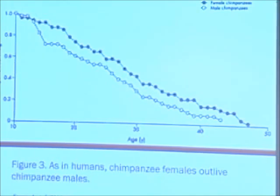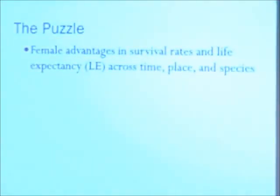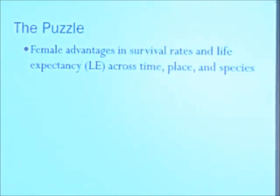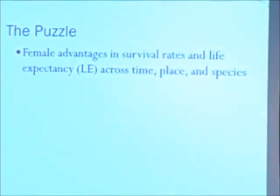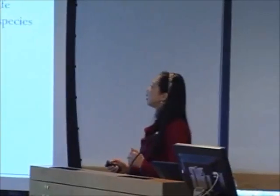The female longevity superiority is not some human idiosyncrasy but is relatively widely observed in the animal kingdom. In chimpanzees, close primate relatives, females also outlive males. This puzzle — female advantages in survival across time, space, and species — dispels simple explanations particular to a specific time or place, like smoking or access to nutrition and resources.